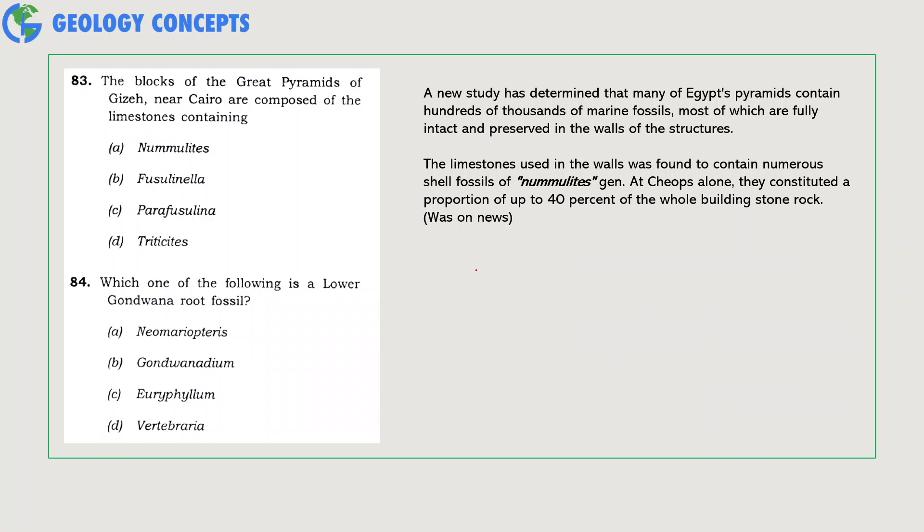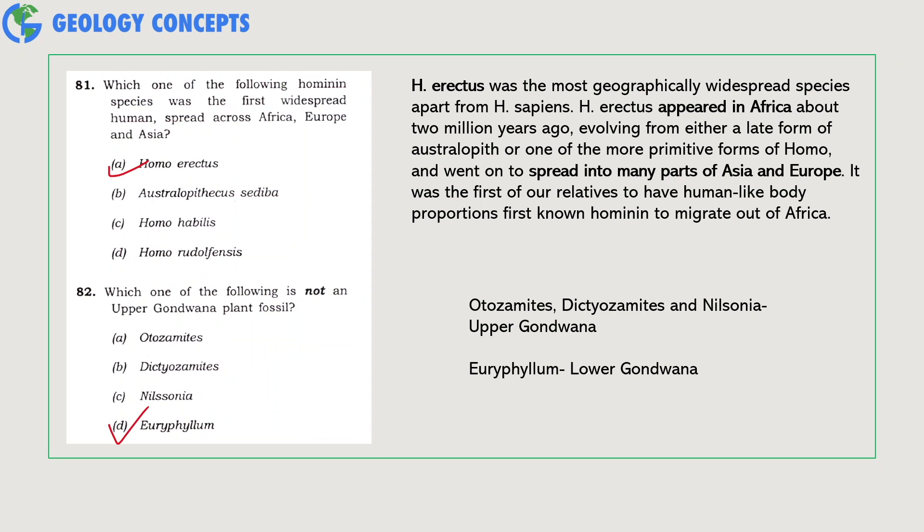I'm sorry, I skipped the last two questions. Which one of the following hominid species was the first widespread human which spread across Africa, Europe, and Asia? Homo erectus was the most geographically widespread species apart from Homo sapiens. It appeared in Africa about two million years ago after evolving from either a late form of Australopithecus or one of the more primitive forms of Homo, and went on to spread into many parts of Asia and Europe. It was the first of our relatives to have human-like body proportions and first known human to migrate out of Africa. So Homo erectus is the right answer.